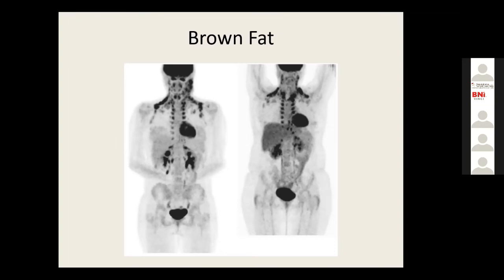Normal physiological FDG uptake is seen in the brain, myocardium, kidneys, and urinary bladder. Apart from these, brown fat can also show physiological uptake. The PET-CT system uses contrast CT for the brain parenchyma, making brain metastasis detection equivalent to contrast CT. FDG PET-CT with contrast CT is very good for detecting brain secondaries.